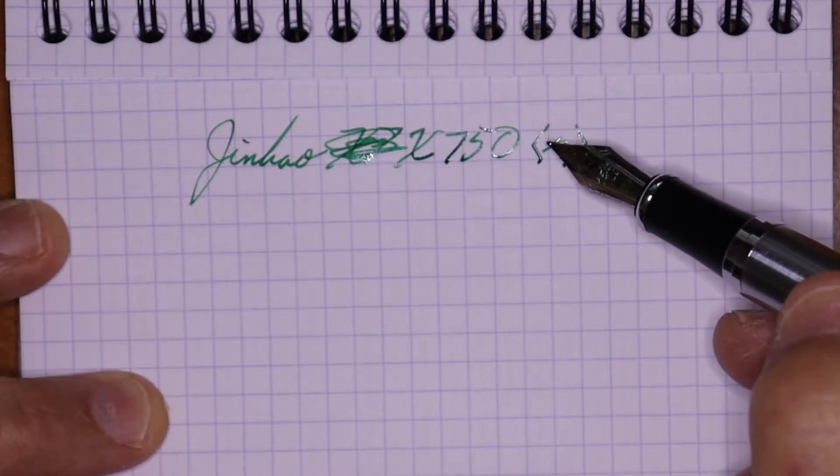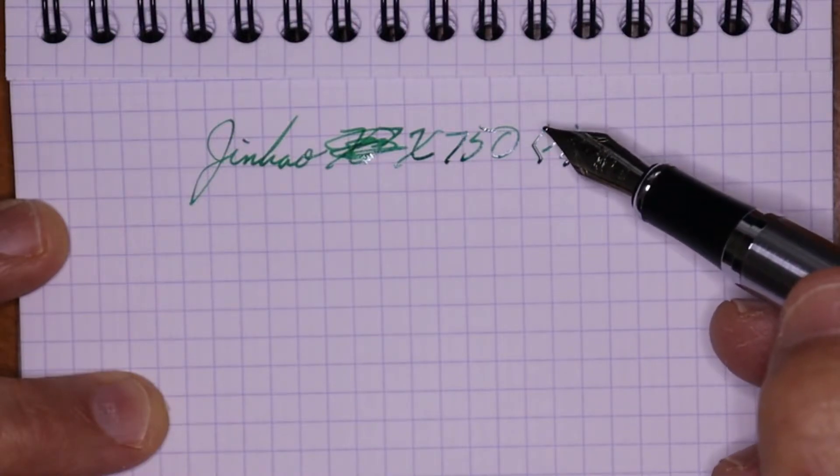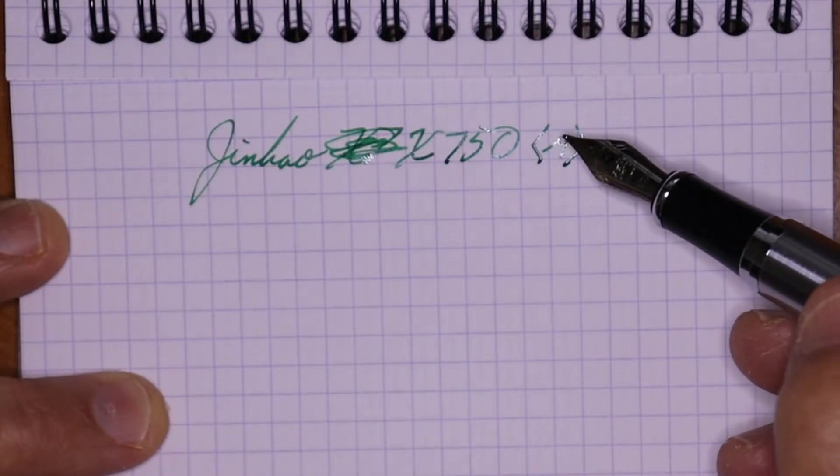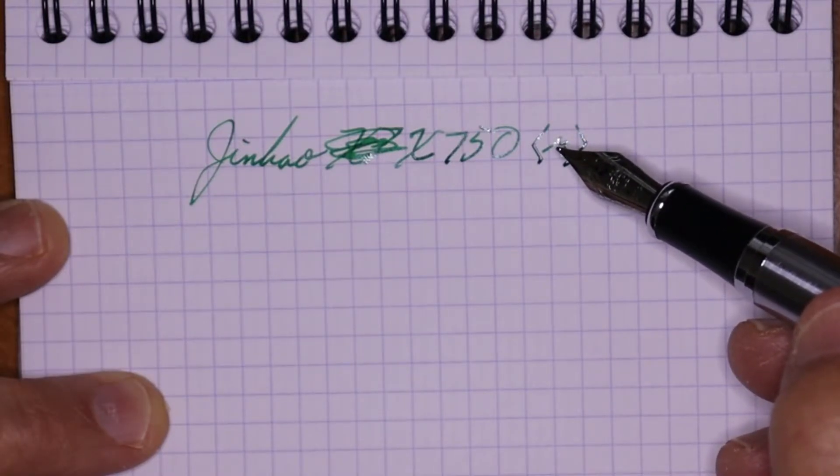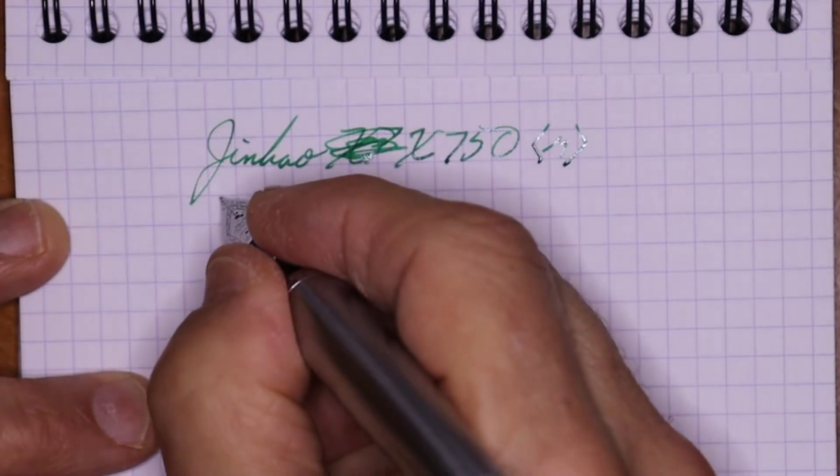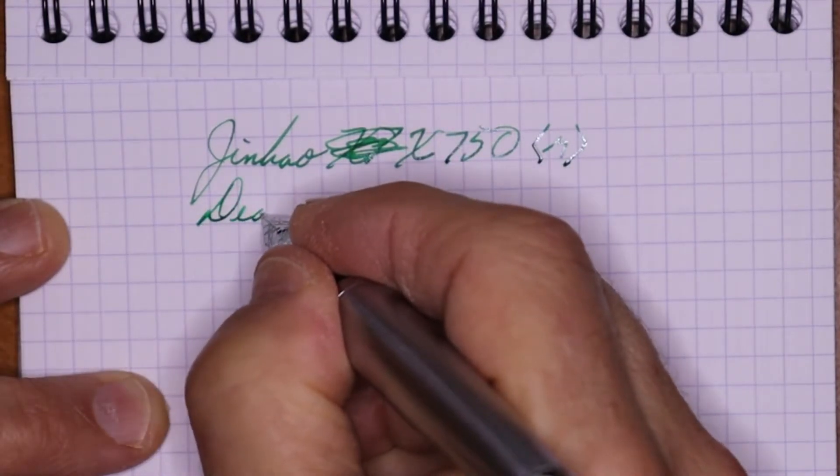There's not a lot of nib tip options for these. They come in medium, I've seen 1.0 stubs and broad. Haven't seen any fines but I believe you can buy Jinhao nibs separate and so there's probably fines in there.